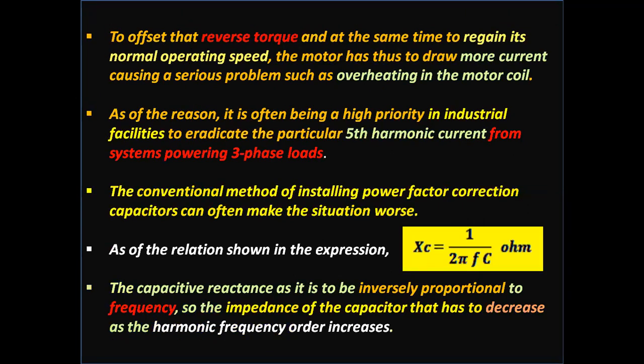To offset that reverse torque and regain normal operating speed, the motor has to draw more current, causing serious problems such as overheating in the motor coil. For this reason, it is often a high priority in industrial facilities to eradicate the fifth harmonic current from systems powering three-phase loads, because fifth harmonic current causes reverse torque.